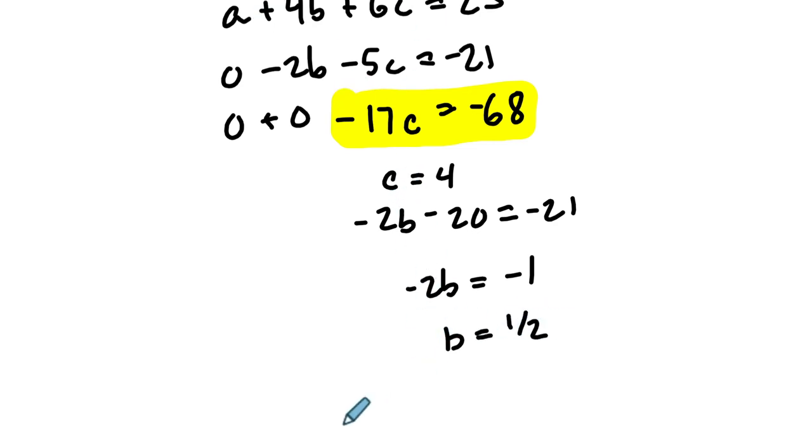We know C. We can go back and solve A. A plus 4 times B plus 6 times C equals 23. So A plus 2 plus 24 is 23.